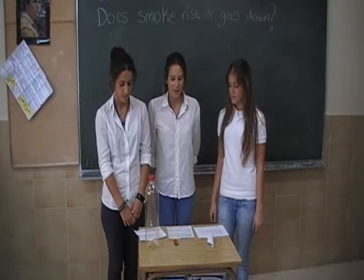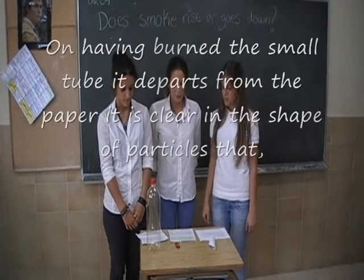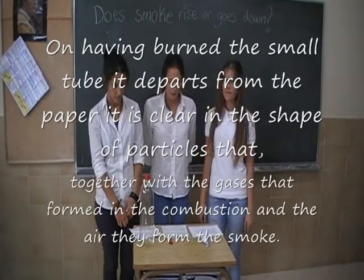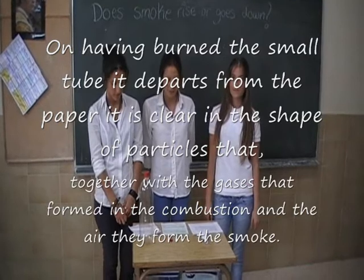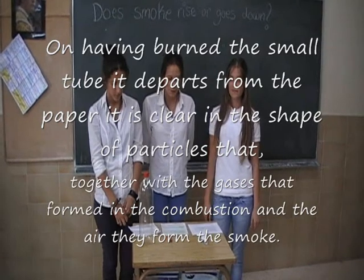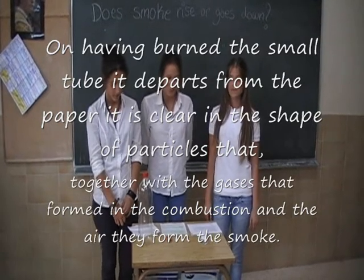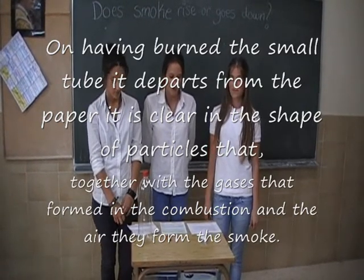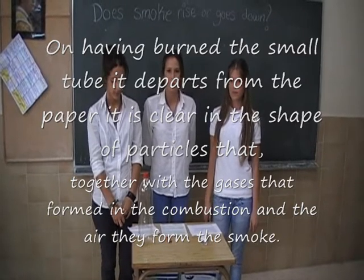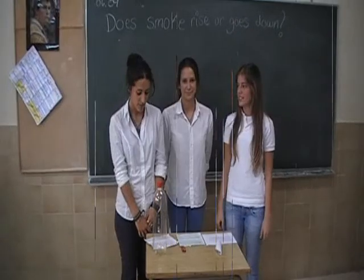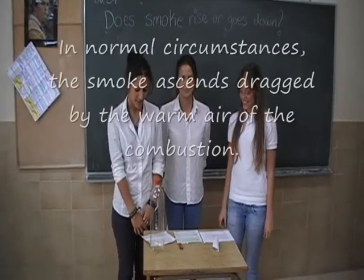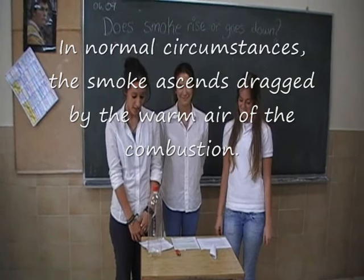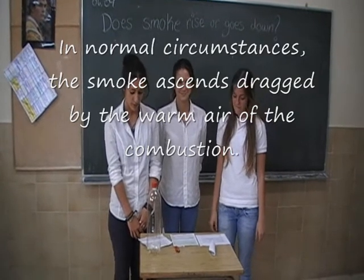On lighting it, the small tube of paper produces smoke. It is clear in the shape of particles that, together with the gases forming during combustion and the air, they form the smoke. In normal conditions, the smoke ascends by the heat of the combustion.